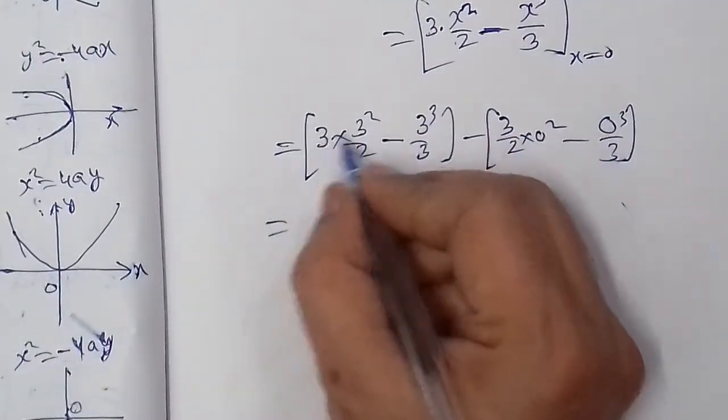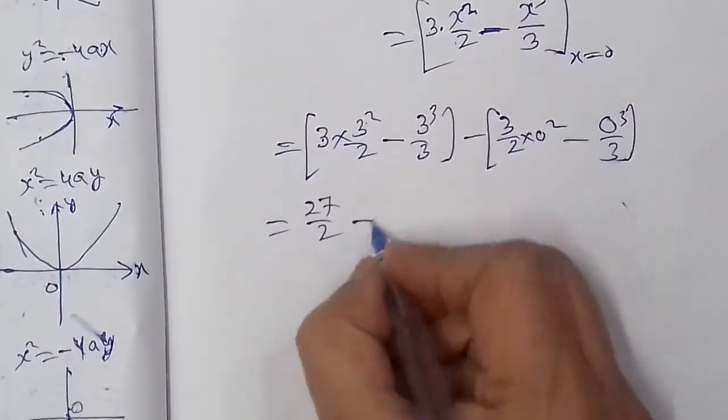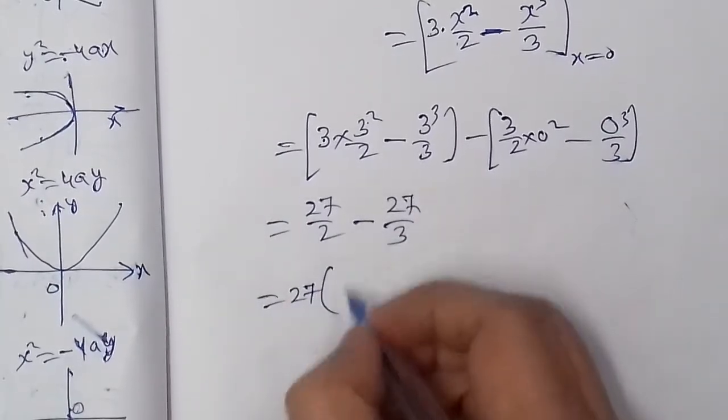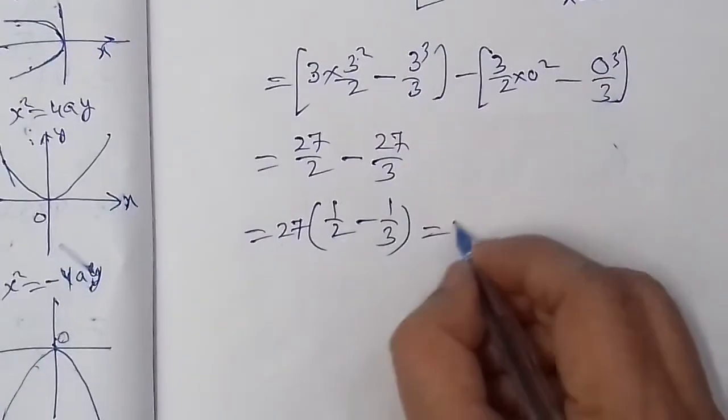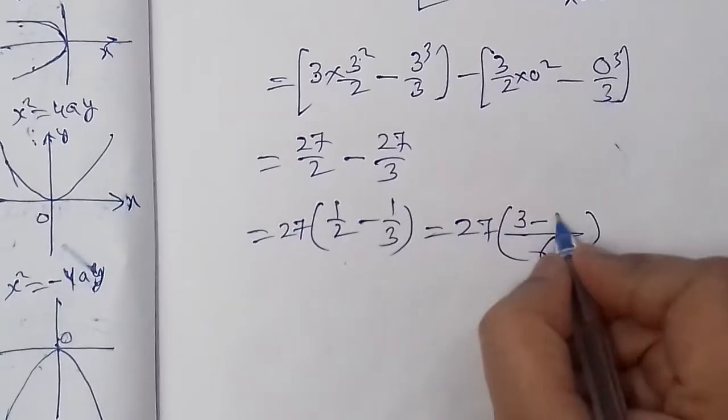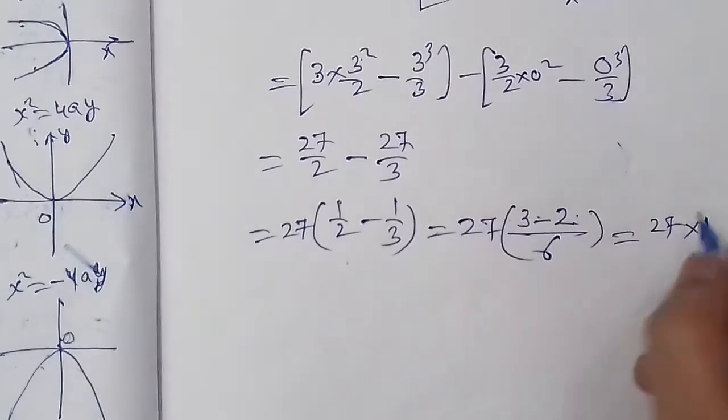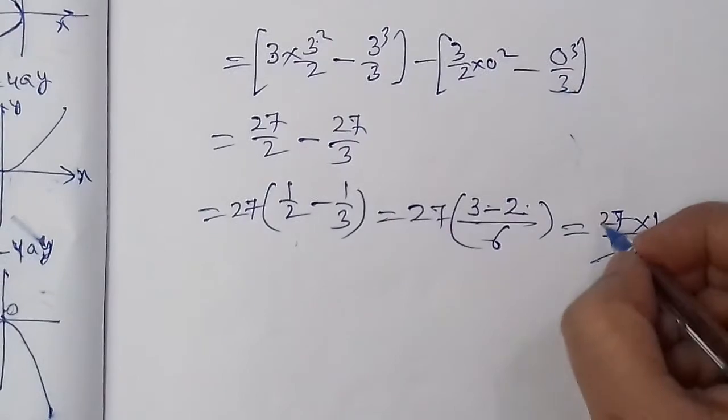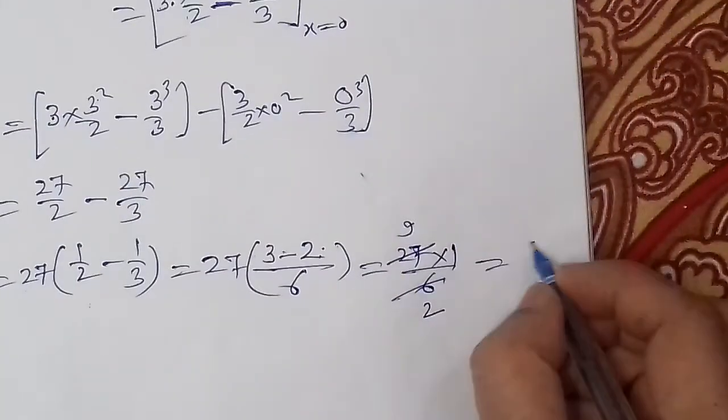For the upper limit 3: we get 3(9)/2 minus 27/3, which equals 27/2 minus 9. This simplifies to 27/2 minus 18/2, giving us 9/2 as the answer.